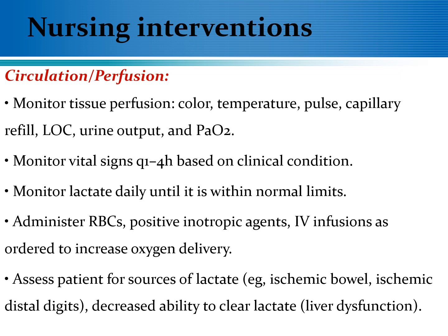Regarding the intervention to improve circulation and perfusion, you have to monitor your patient's temperature, color, capillary refill, heart rate, level of consciousness, urinary output, and partial pressure of arterial oxygen tension. Monitor vital signs every one to four hours, monitor the patient's serum lactate level daily, and administer packed RBCs, positive inotropic agents, intravenous infusion as ordered, as well as oxygen therapy. Routinely monitor lactate levels and avoid any source responsible for excess serum lactate, including ischemic bowel, peripheral ischemia, and liver dysfunction.